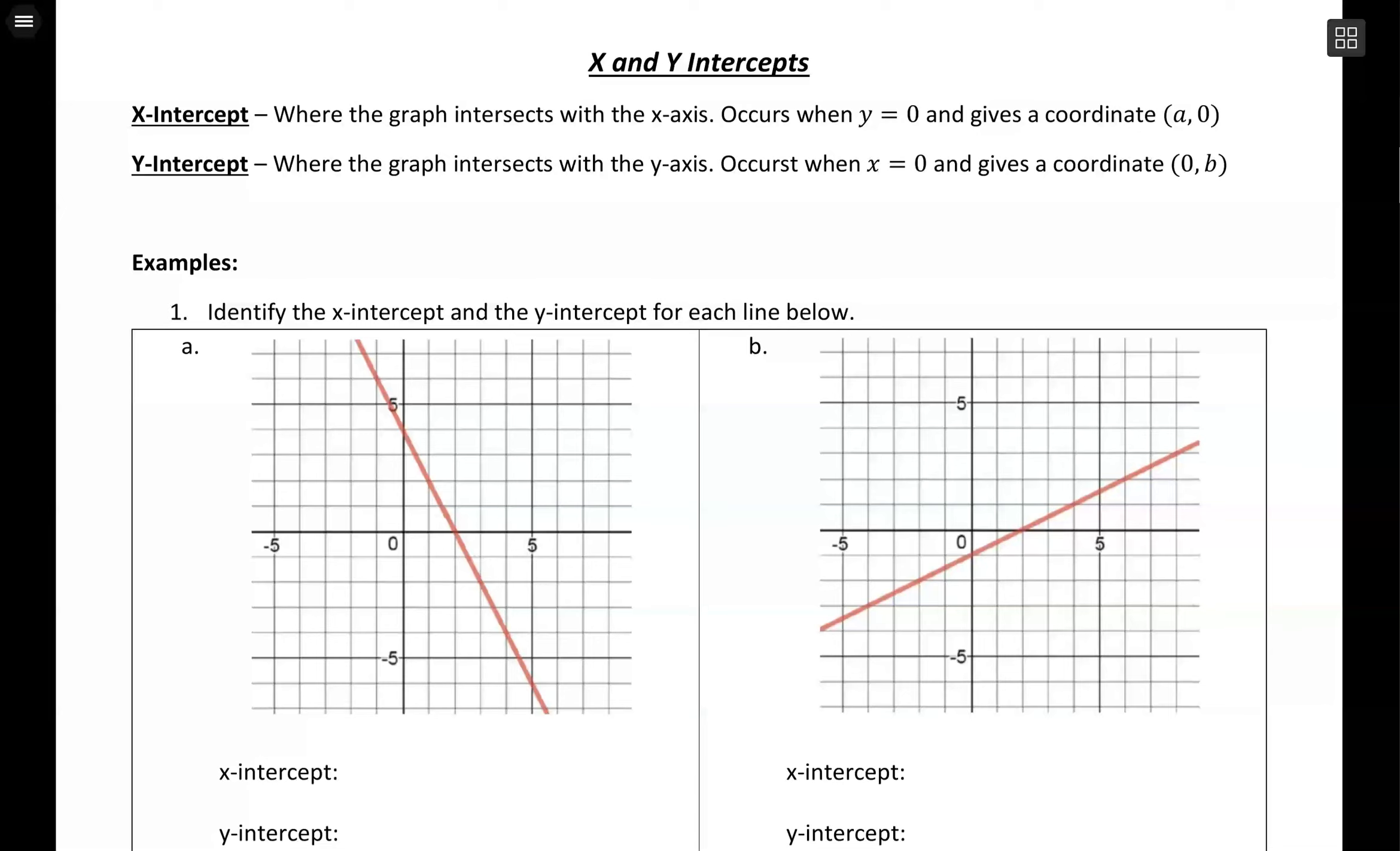The x and y-intercepts are important points that show us where we intersect the x-axis and where we intersect the y-axis. With x-intercepts, that's where we're going to cross the x-axis, and that occurs when y is equal to 0. So you're going to end up with this coordinate where you have a value for x, and then y has to be 0.